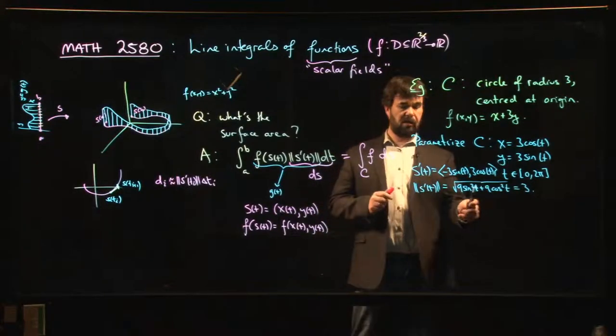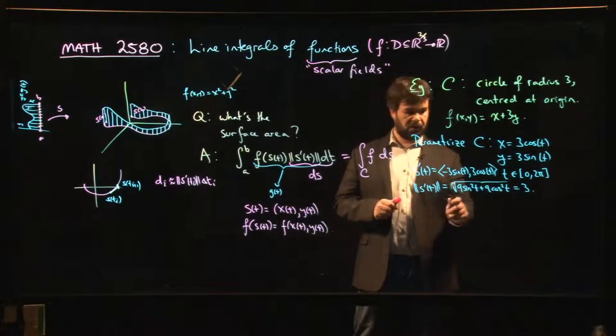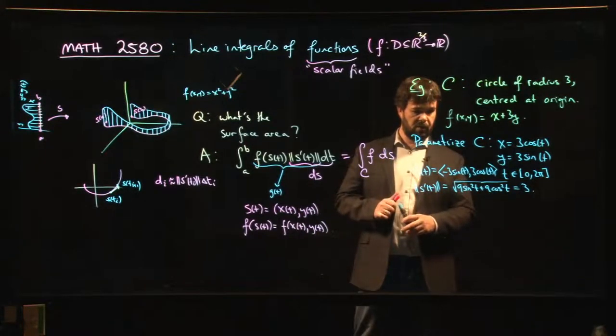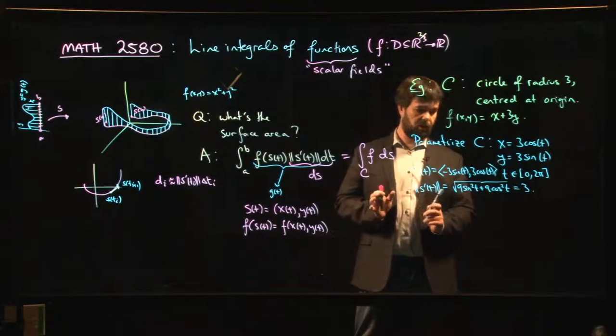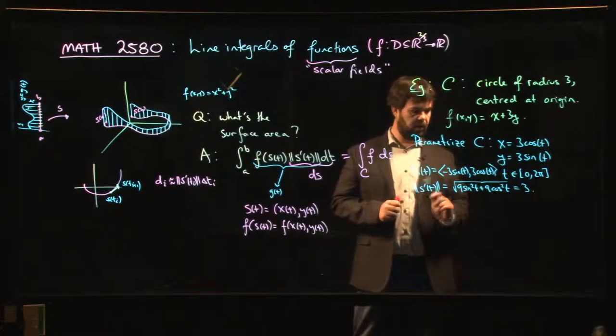in a lot of these cases, you probably remember computing arc length—once you get some function under that square root, it's going to cause all kinds of trouble for actually evaluating the integral. So here we're lucky we get a constant value of 3.